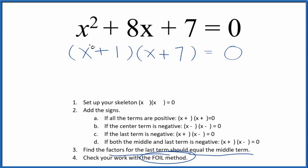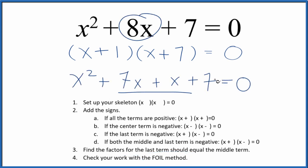But we want to check our work with the FOIL method. First, outside, inside, and last, that gives us... And if we combine 7x and 1x, we get 8x. We have x squared plus 7. Same thing we started out with. So we factored x squared plus 8x plus 7 correctly.